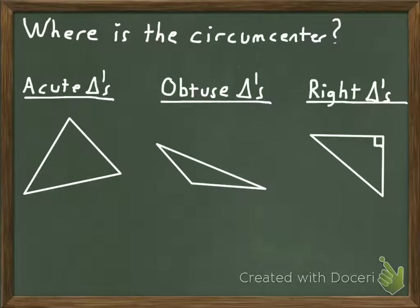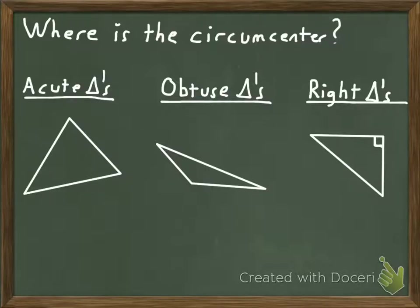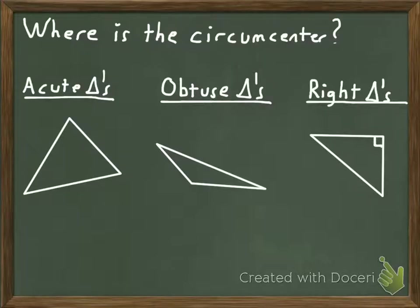Where is the circumcenter is a question you'll be expected to answer. It turns out the location of the circumcenter of a triangle differs depending on what type of triangle it is — specifically whether it's acute, obtuse, or a right triangle. I'm going to draw the perpendicular bisectors of all three sides of each of these triangles. What I'm really asking is whether the circumcenter would be inside the triangle, outside the triangle, or on one of the sides of the triangle.